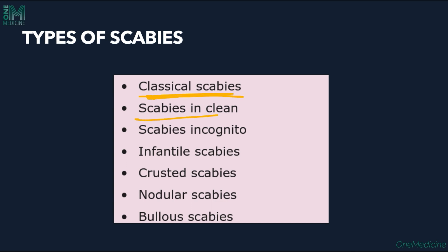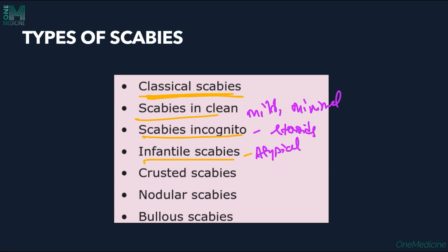In scabies in the clean, the infection is mild with only minimal itching present. In scabies incognito, the lesions are morphed by the use of steroids. In infantile scabies, infants are affected with atypical presentation — the palms and soles can be involved, there may be eczematization, and burrows are typically absent. Crusted scabies is a very severe form with hyperkeratotic lesions on the palms and soles, contains millions of mites, and is highly contagious.